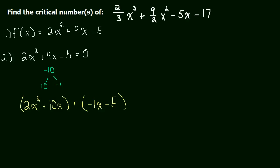And now we're just going to factor out what we can from each group. So in the left group, we can get a 2x out of there. And what's left is just going to be x plus 5. And then in the other group, we can get a negative 1 out. So we take a negative 1 out, and we get x plus 5.